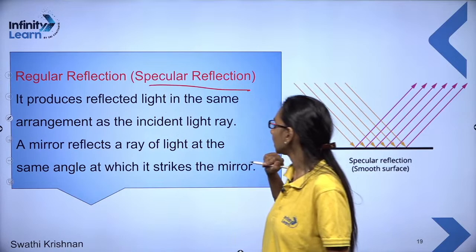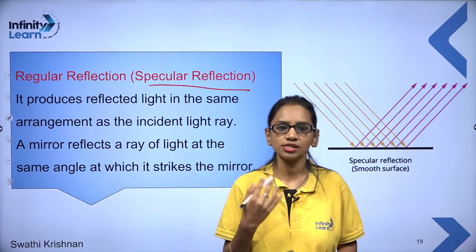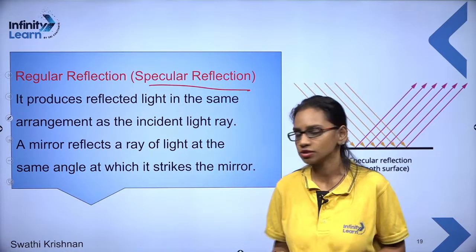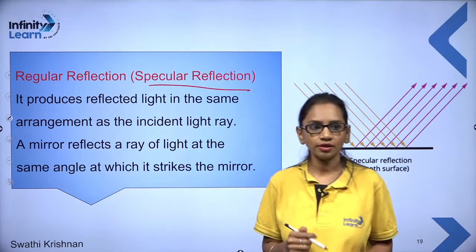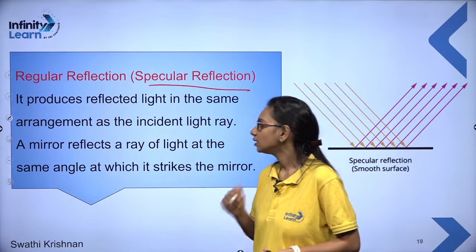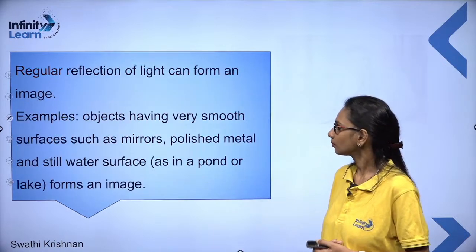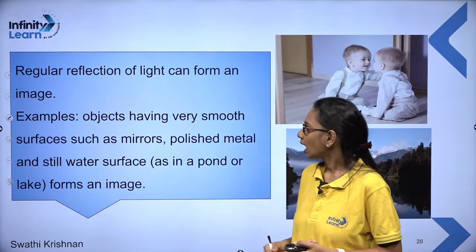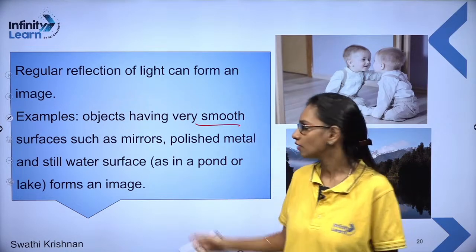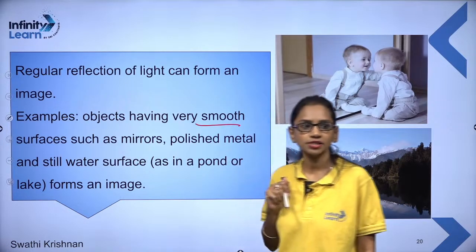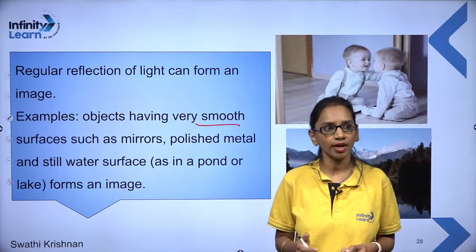In regular or specular reflection, the incident ray and reflected ray are in the same arrangement. A mirror reflects a ray of light at the same angle at which it strikes the mirror. Regular reflection can form an image. Objects with very smooth surfaces — such as mirrors, polished metals, and still water — generally give regular reflection and form an image.